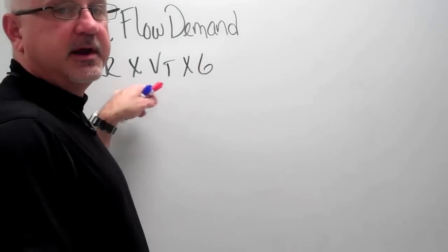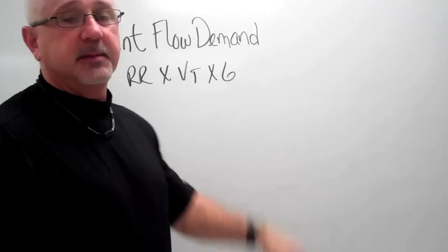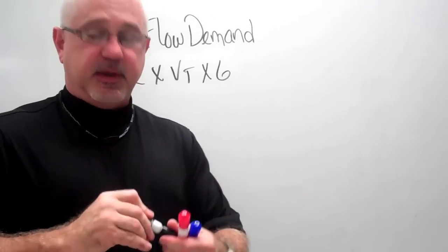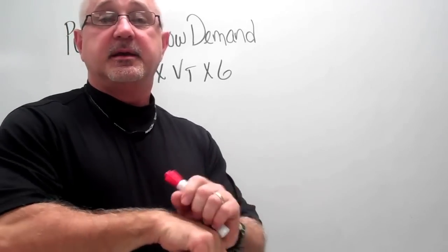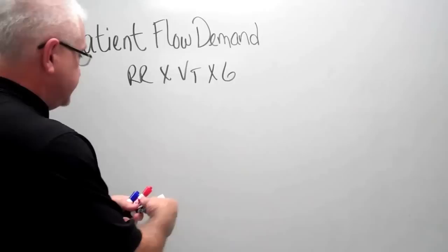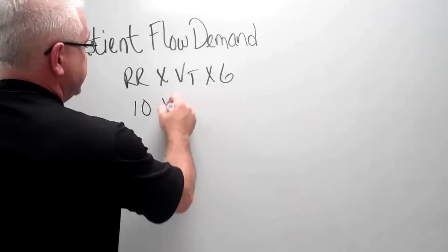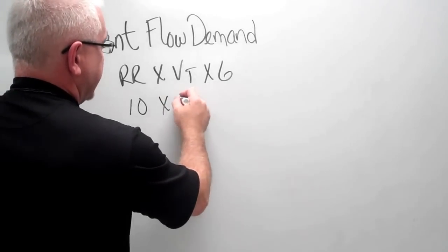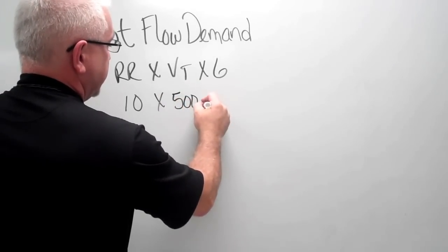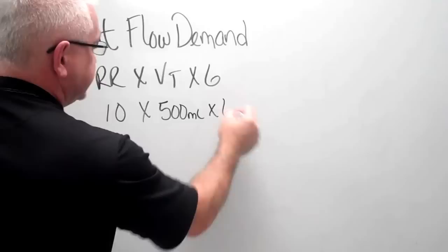By getting the patient's respiratory rate and the tidal volume and multiplying it by 6, I can come up with the patient's inspiratory flow demand. For example, if I told you that the patient's respiratory rate was 10 times their tidal volume, say their tidal volume was 500 mL times 6.